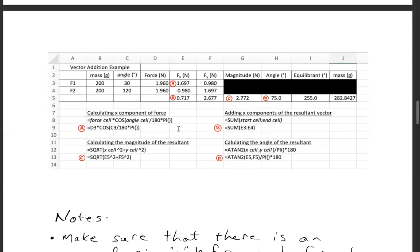Now to calculate the magnitude of the resultant, it's just the square root of the sum of the squares. We do that here in C. So it's the square root of E5 squared plus F5 squared, and you come up with the 2.772.